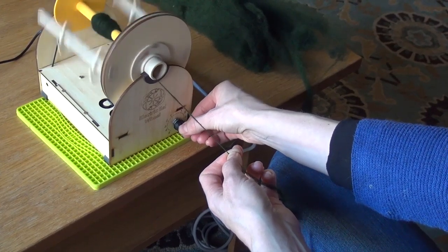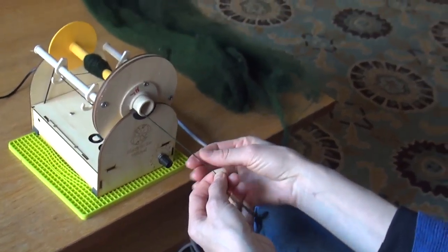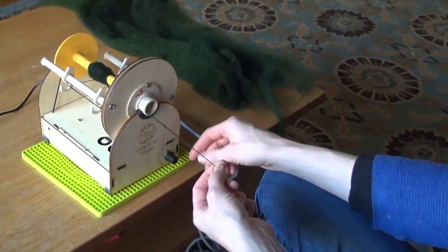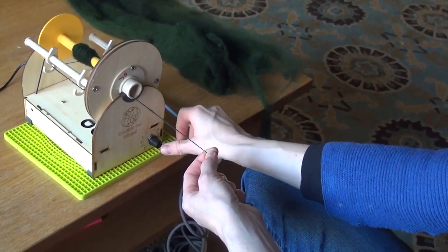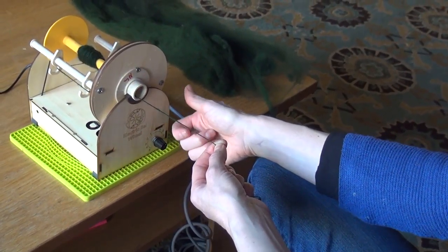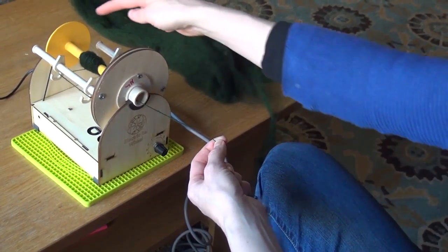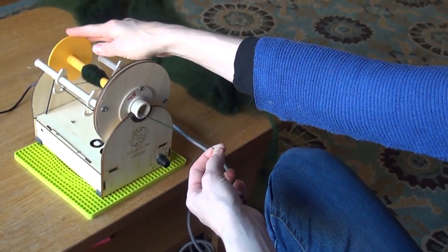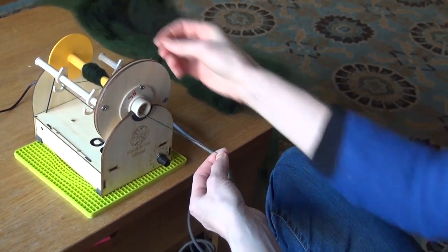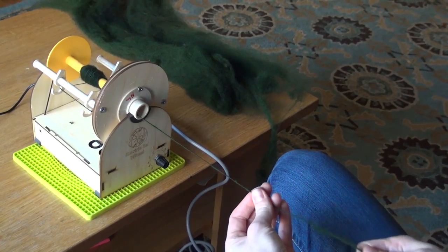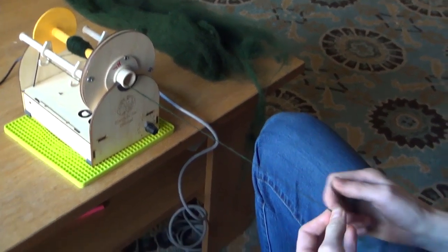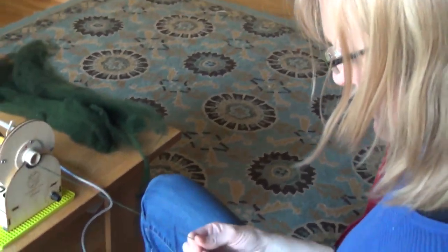If it's underspun, just remember: turn up the speed or turn down the tension so it doesn't pull it out of your hands as quickly. I hope this has helped and will make spinning a little bit easier. Thanks for watching.